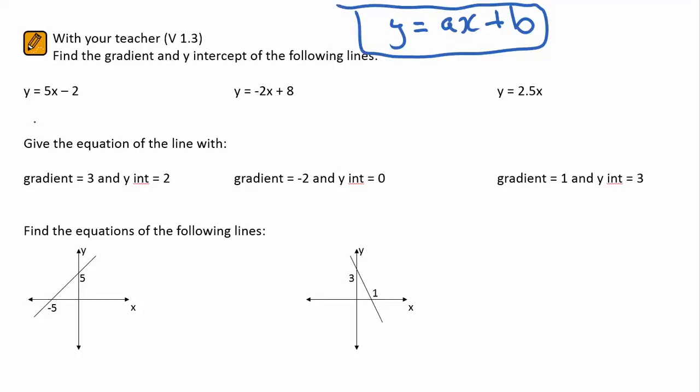In the first instance, a is equal to 5, the gradient is 5, and b is equal to negative 2.